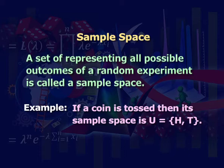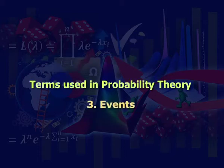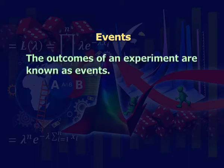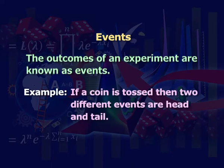We denote head by H and tail by T. Third: events. The outcomes of an experiment are known as the events. For example, if a coin is tossed, then two different events are head and tail.